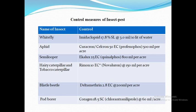Semilooper is controlled by Acalux 25 EC at the rate of 800 ml per acre. NPV and Beauveria bassiana can also help in effective control of semilooper. Neem oil and garlic extract can be sprayed on the foliage to control the pest. For tobacco caterpillar and hairy caterpillar: plough the soil to expose and kill pupae, especially in summer. Set up light traps at 2 per acre or pheromone traps at 15 per hectare to attract male moths. Hairy and tobacco caterpillar are mainly controlled by novaluron at the rate of 150 ml per acre. Bristle beetle and pod borer can be controlled by application of deltamethrin and chlorpyrifos respectively.